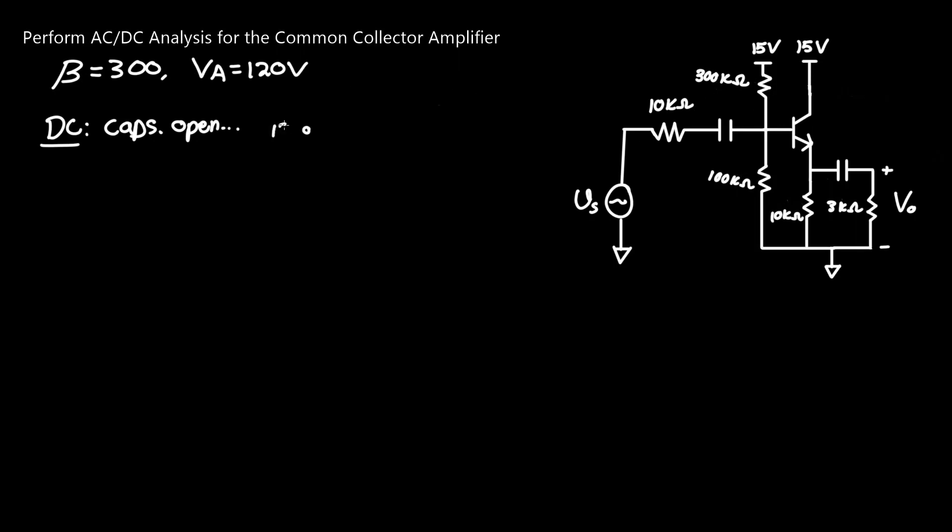Rotating the 15 volt source 90 degrees counterclockwise, we can then draw the 300 kilo ohm resistor, followed by the connected 100 kilo ohm resistor to ground. That is everything to the left of this BJT. We can now add the BJT. We don't have to worry about anything above since we're only doing KVL in the lower half. All we have is a 10 kilo ohm resistor.